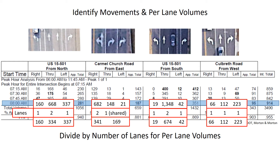In this step we divide by the number of lanes; where there's only a single lane, no division happens. For example, US 15-501 from the north had a volume of 668 with two lanes, so we divide by two to get a per-lane volume of 334. Another example is the shared lane from the east for the through and left movements — we add 148 and 21 to get a total per-lane volume of 169 vehicles.